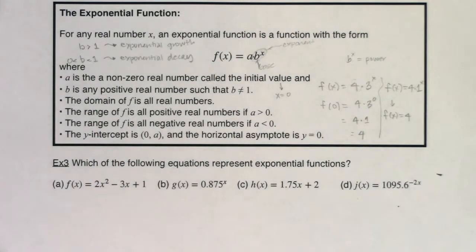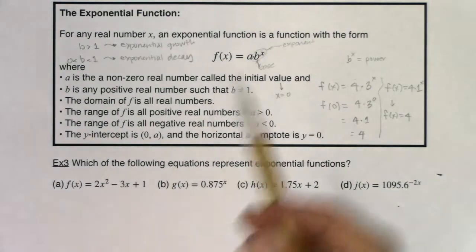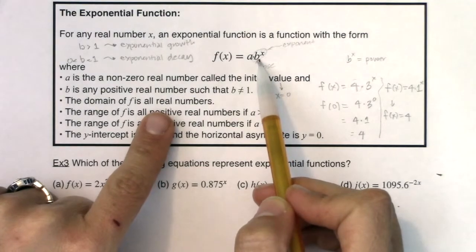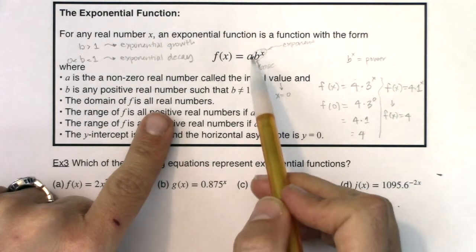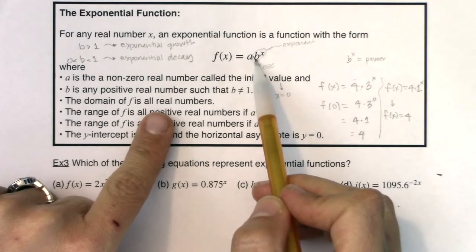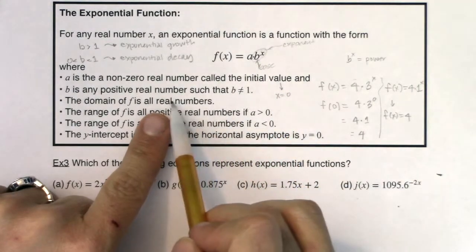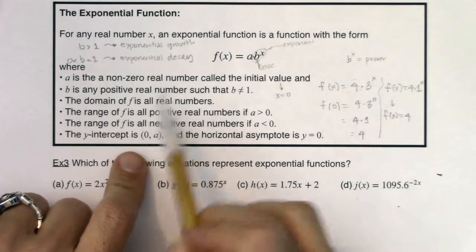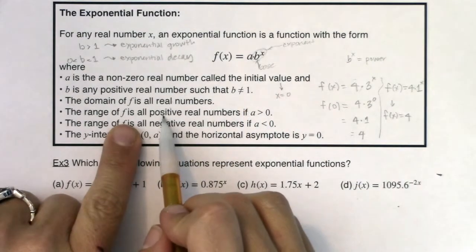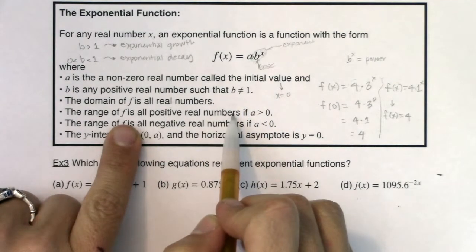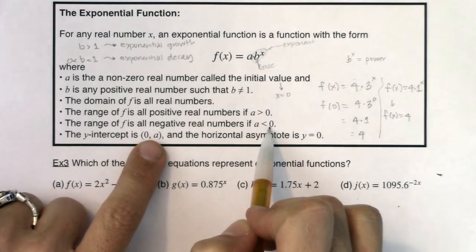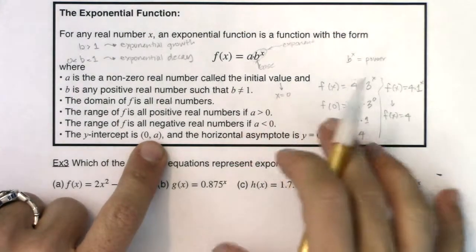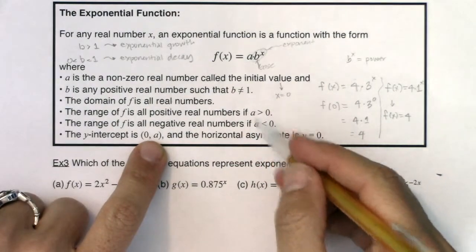The domain of every exponential function, every exponential function a times b to the x is all real numbers. We've talked about our three domain issues before. We don't have fractions, we don't have a radical, and we don't have a logarithm. So there's no domain issues I need to worry about. So my domain's all reals. The range of these functions, if a is positive, then your range will be all positive real numbers. And if a is negative, your range will be all negative real numbers.